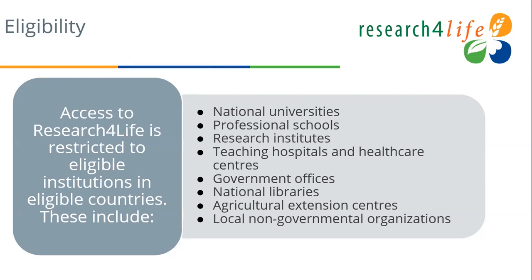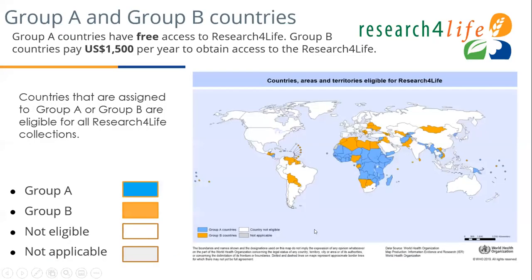Group B countries must pay $1,500 per calendar year to obtain access to Research for Life. Only institutions in eligible countries can access the platform — these include national universities, professional schools, research institutes, teaching hospitals, healthcare centers, government offices, national libraries, agricultural extension centers, and local NGOs. A map displays countries assigned to Group A in blue, Group B in orange, not eligible in white, and not applicable in gray.